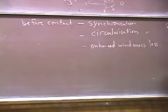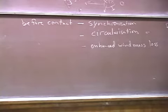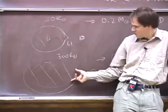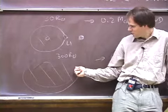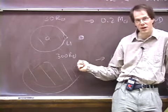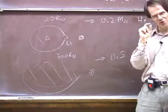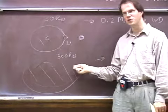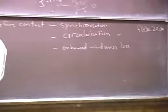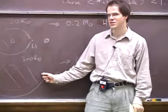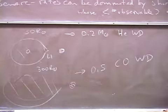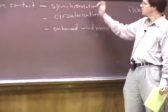Another possibility — not taken seriously until recently when it became necessary to explain observations — is that as the star approaches its Roche lobe, the binding energy needed to drive a wind is reduced: you only need to get material from the star to the Roche lobe, not to infinity. So mass-loss rates can be strongly enhanced near the Roche lobe, potentially leading to large angular momentum loss and changes in the orbital separation.